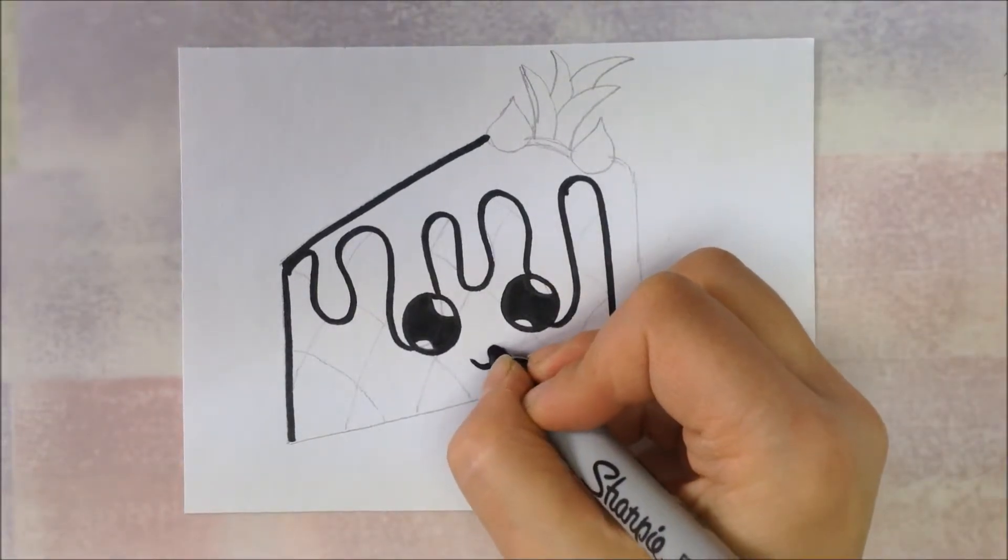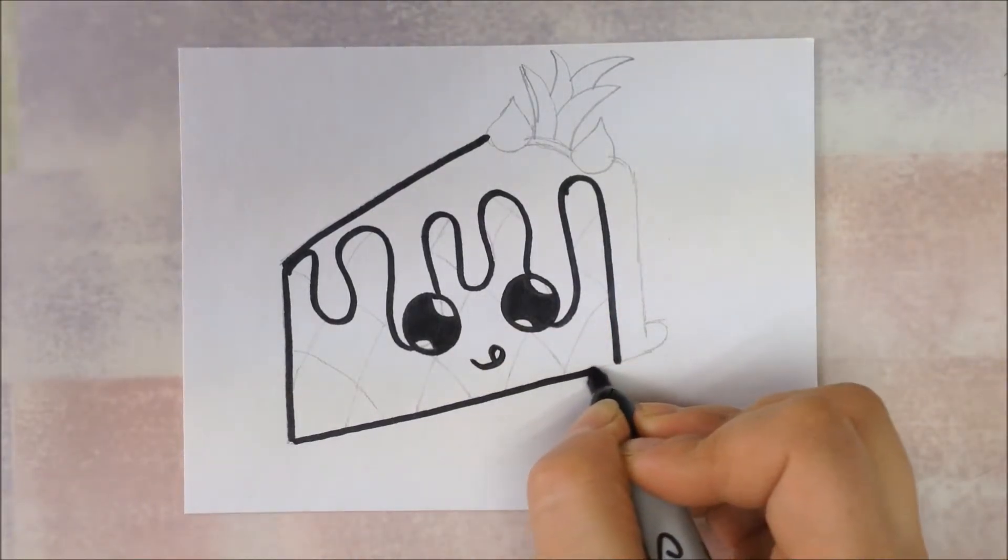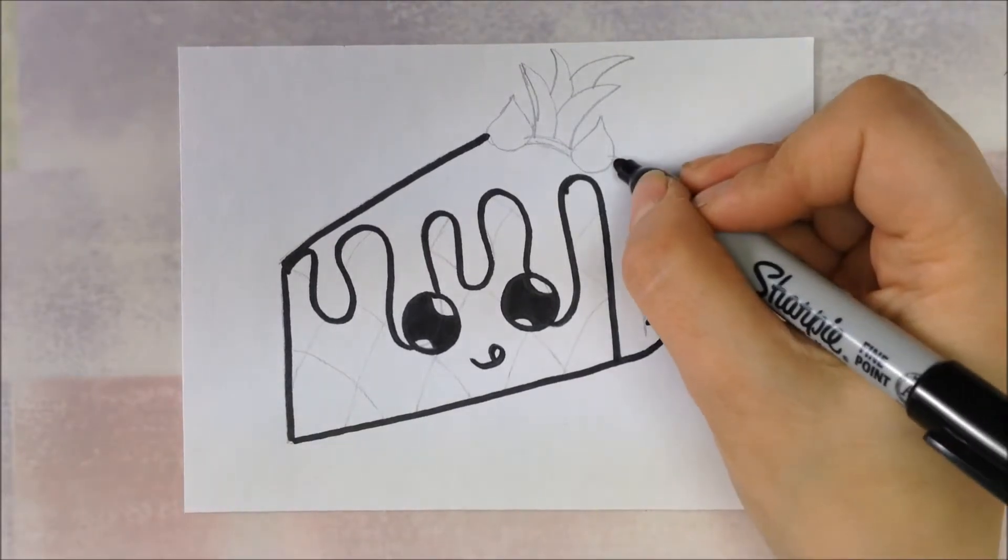When you outline his mouth, be very careful when you do the tongue because if you go too fast and not pay attention, it can get filled in because it's such a tiny spot.